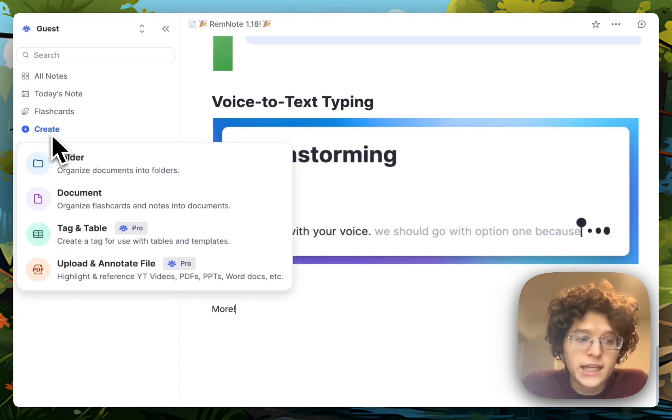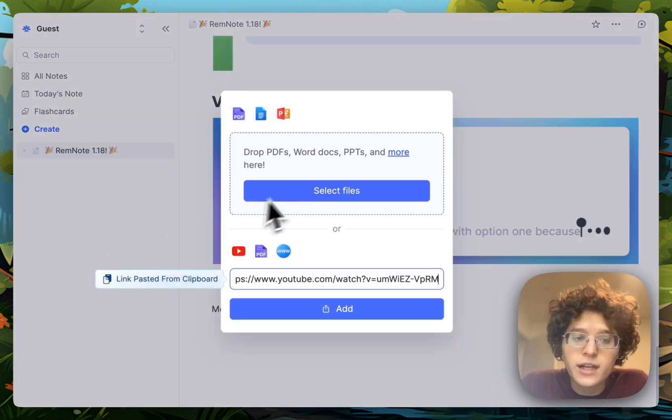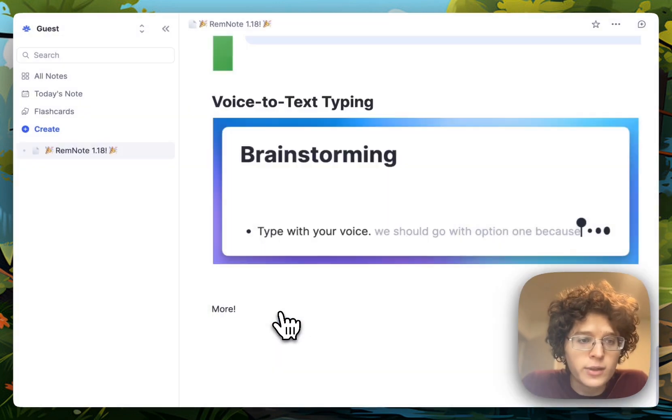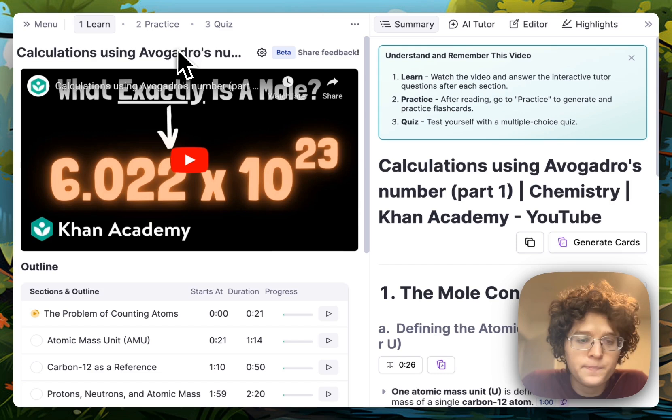You can enable this by going to create and then uploading whatever content you have. Here I already had a YouTube link copied to my clipboard, so I'll add that, and we can see that it immediately opens up here. On the left we have our content, in this case a YouTube video, and on the right we have a variety of our options.